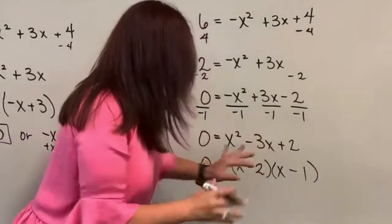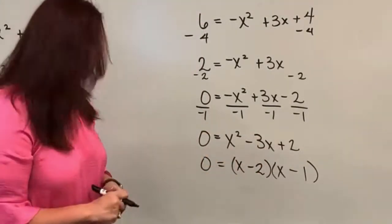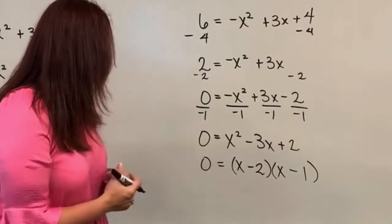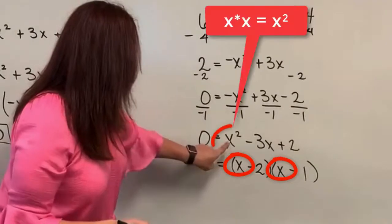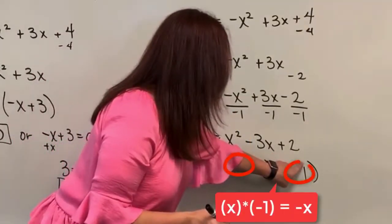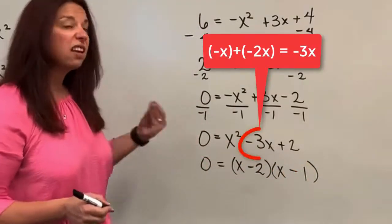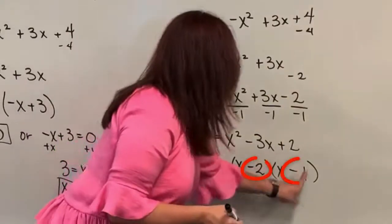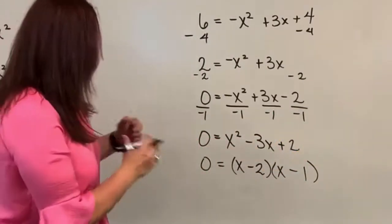So let's just foil this out, distribute everything, all the terms, and make sure that we've got exactly what we started with in the line above. So if I do x times the x, if I multiply those guys together, I have x squared. Great. x times a negative one, and then a negative two times x. Add those together. Negative three x. Great. And then a negative two times a negative one. Positive two. So we've factored perfectly.